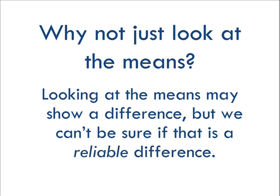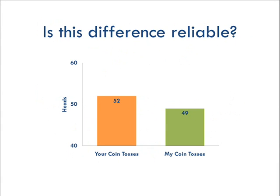For example, if you and I both flip a coin 100 times, and you get heads 52 times and I get heads 49 times, does that mean you reliably get more heads than me? Are you somehow more likely to get heads in the future? No. There's no real difference — it's only chance.